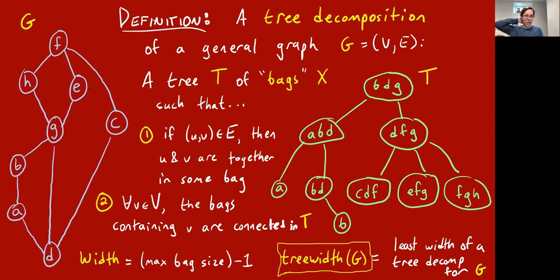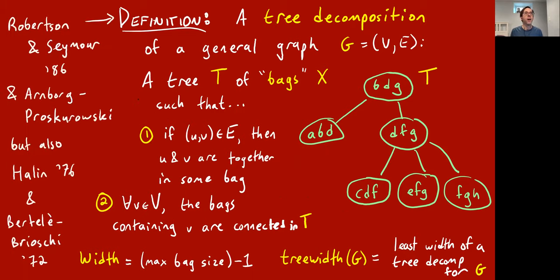Why is there a minus one? It's put in so that if G is a tree, its tree width is one. So trees have tree width one. This exact definition — with the bags, the width, and so forth — was first made by Robertson and Seymour in 1986, but Arnborg and Proskurowski defined an equivalent concept also around 1985–1986.